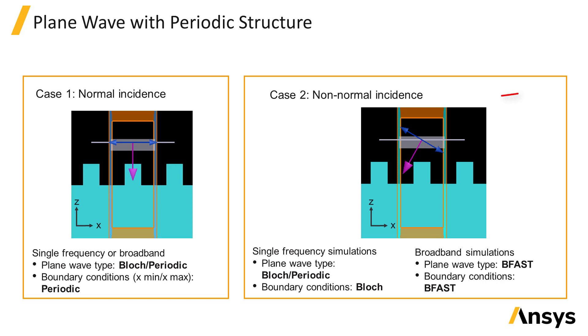In case 2, light is injected at an angle away from normal. If the source is single frequency, then the Bloch periodic plane wave should be used in conjunction with Bloch boundaries at the sides.